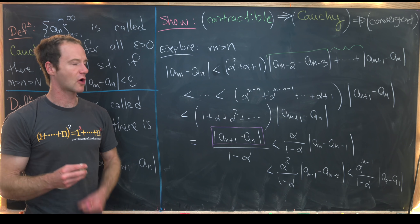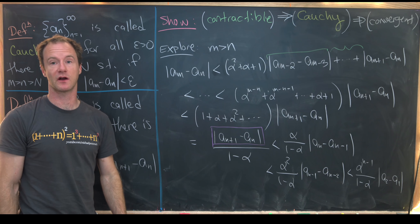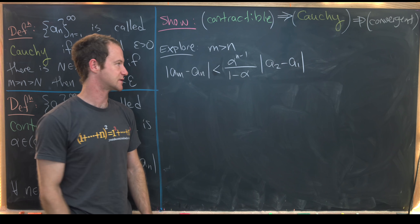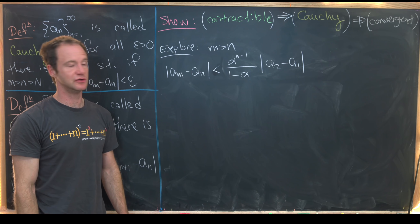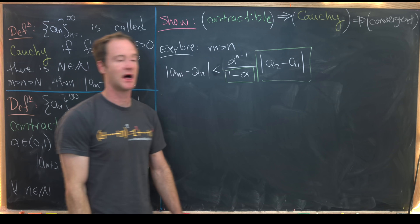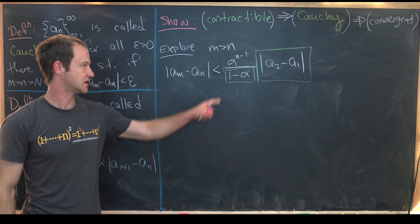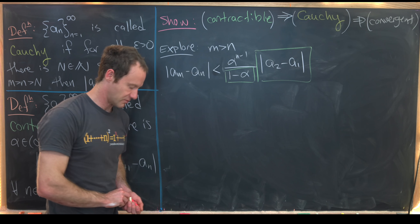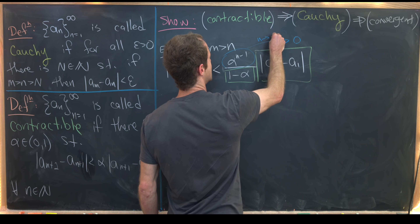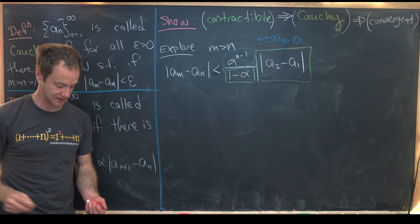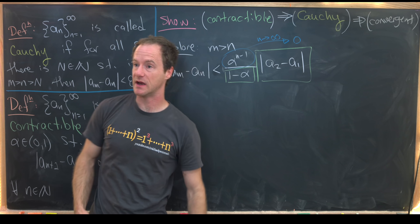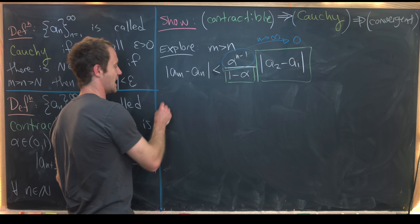So our exploration gives us: |a_m - a_n| < alpha^{n-1}/(1 - alpha) times |a_2 - a_1|. The quantity |a_2 - a_1|/(1 - alpha) is a constant — it never changes. Since alpha is between zero and one, as n goes to infinity alpha^{n-1} goes to zero. This gives us motivation for how to choose capital N given epsilon in our proof that this is Cauchy.